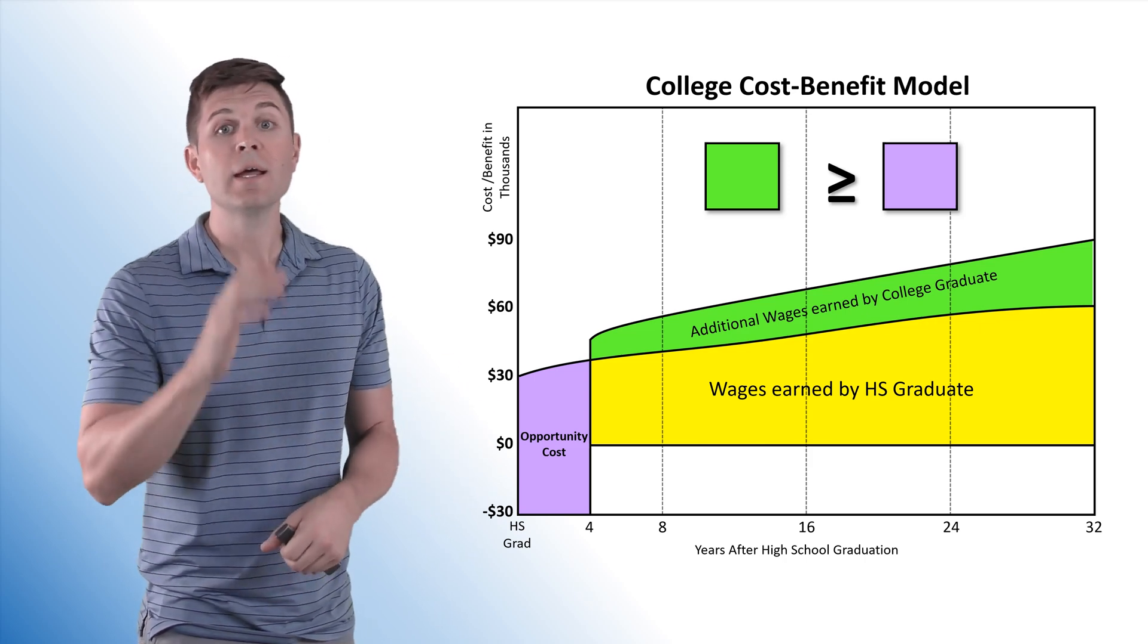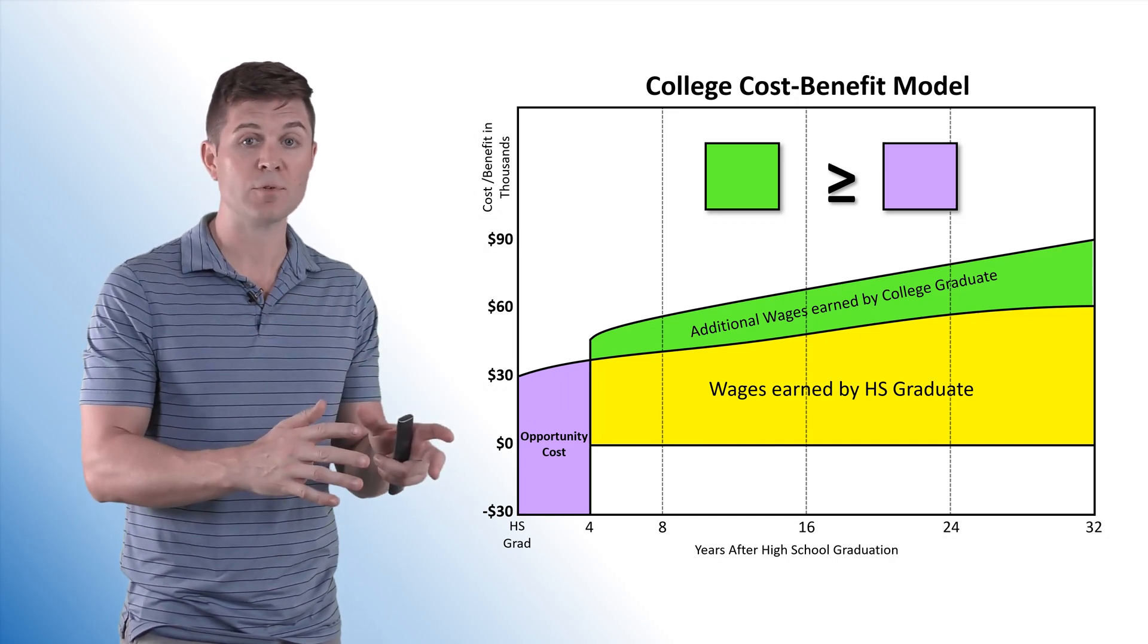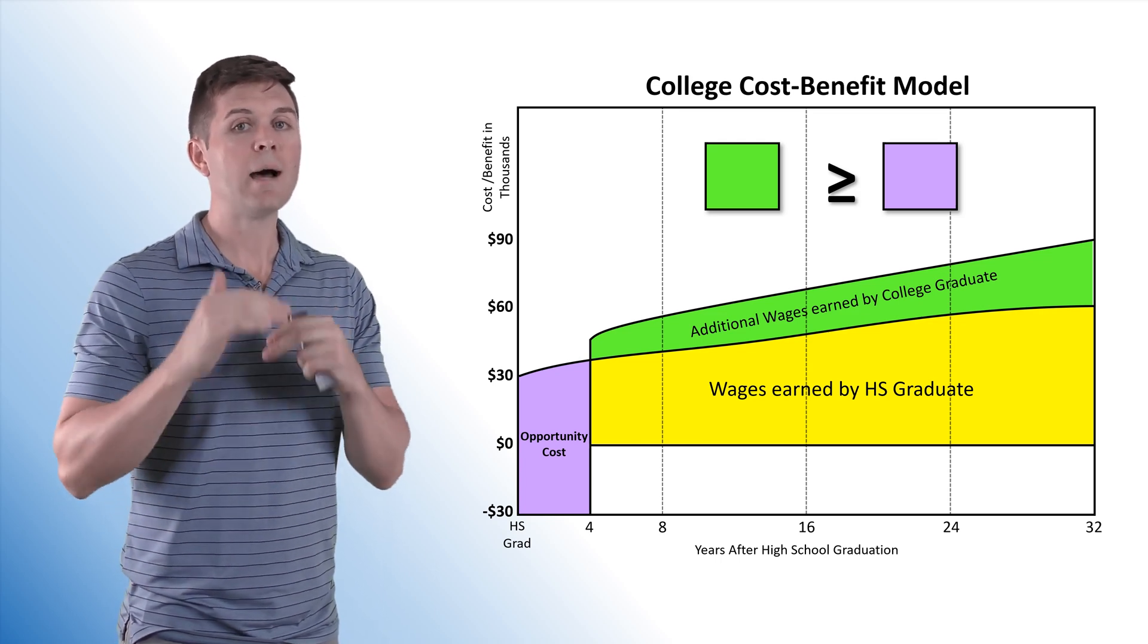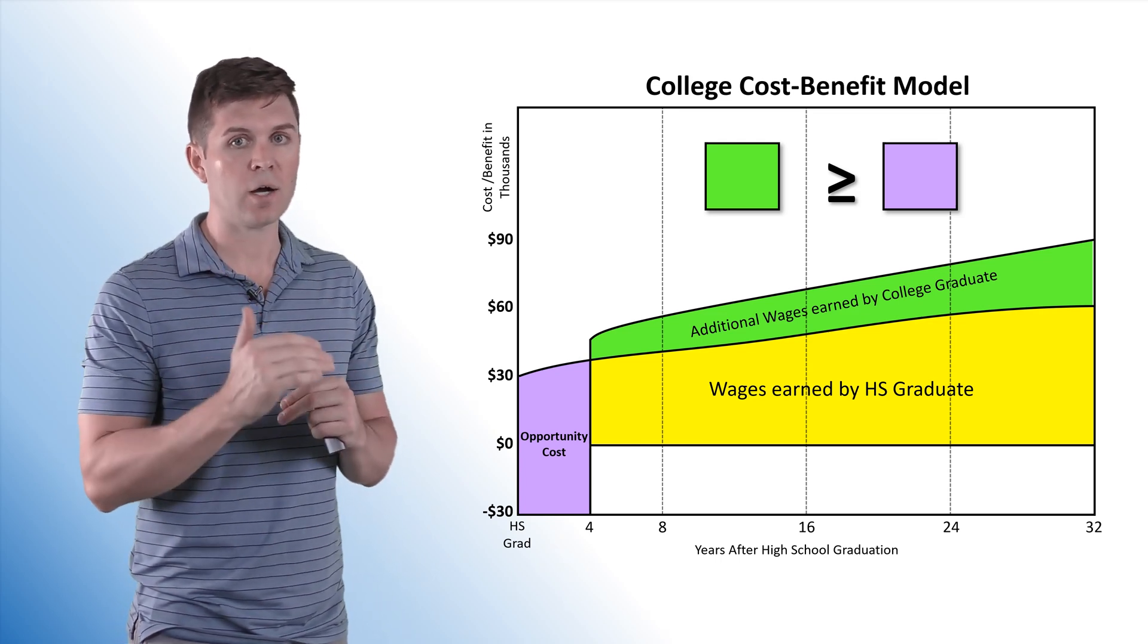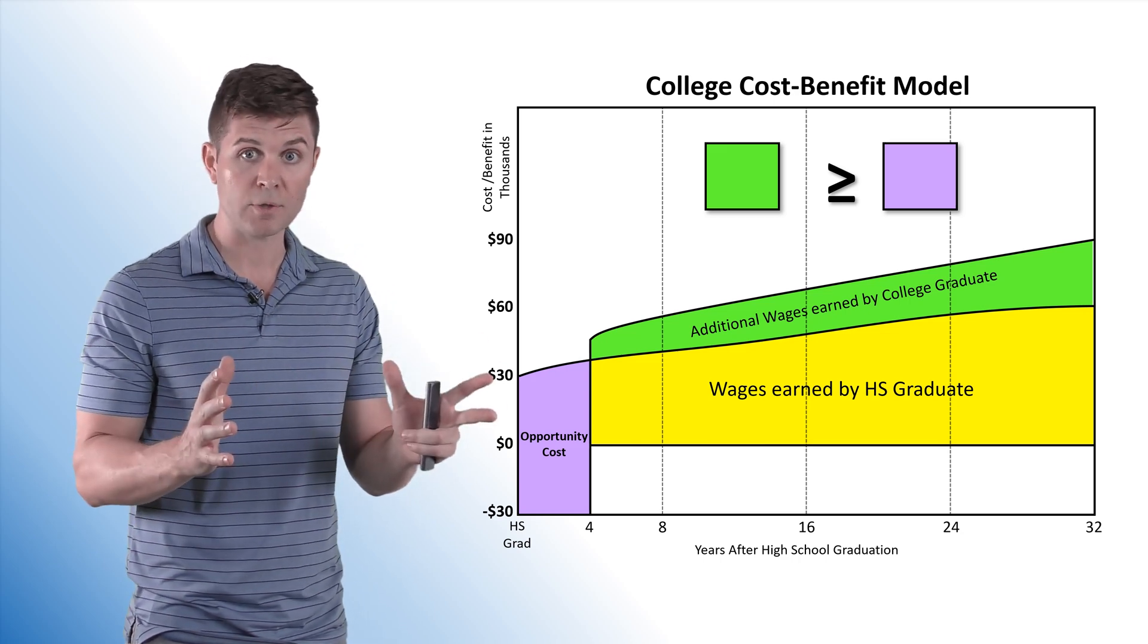Now, one more thing to add real quick. We're only looking at the financial situation here. There are a lot of other benefits of going to college, the types of jobs you get, and I'm not discouraging anyone from going to school. I'm just pointing out that we make a cost-benefit analysis, and we have to consider both the implicit and explicit costs, or opportunity costs, of going to college.